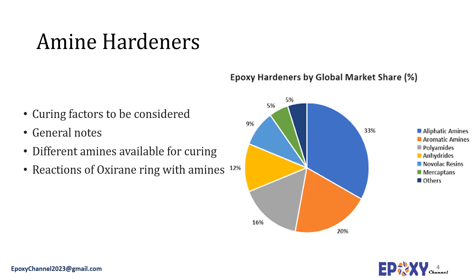It should also be mentioned that secondary and tertiary amines may react with the epoxide group through hydroxyl etherification. In this case, the synthesized compound possesses a hydroxyl group and an ether linkage along with the secondary amine.